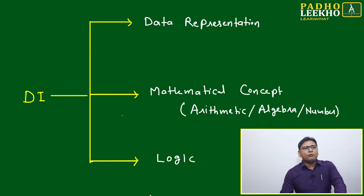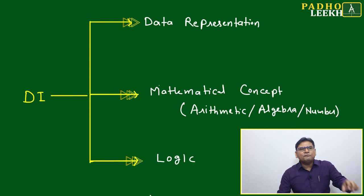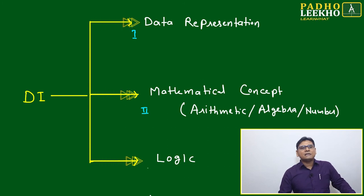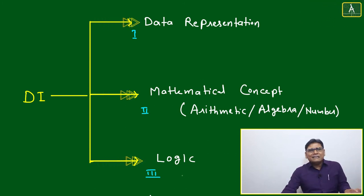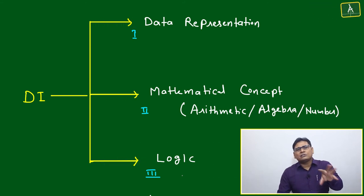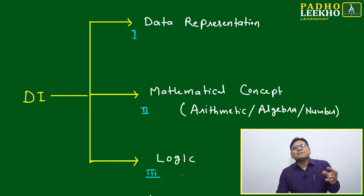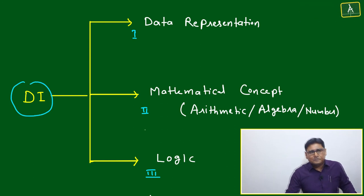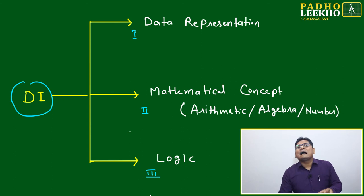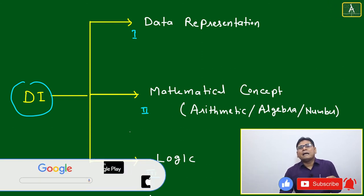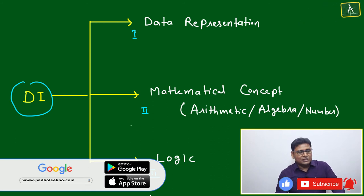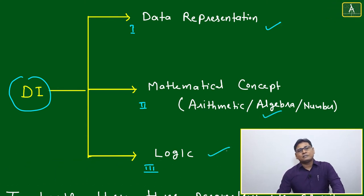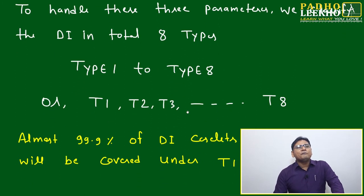In summary, DI has three key pillars: point one is data representation, point two is mathematical concept, and point three is logic. A DI caselet can be based on data representation plus logic, or mathematical concept plus logic, or data representation plus mathematical concept. Any combination of these three creates a different set of DI caselets, and our classification is based on these three parameters.